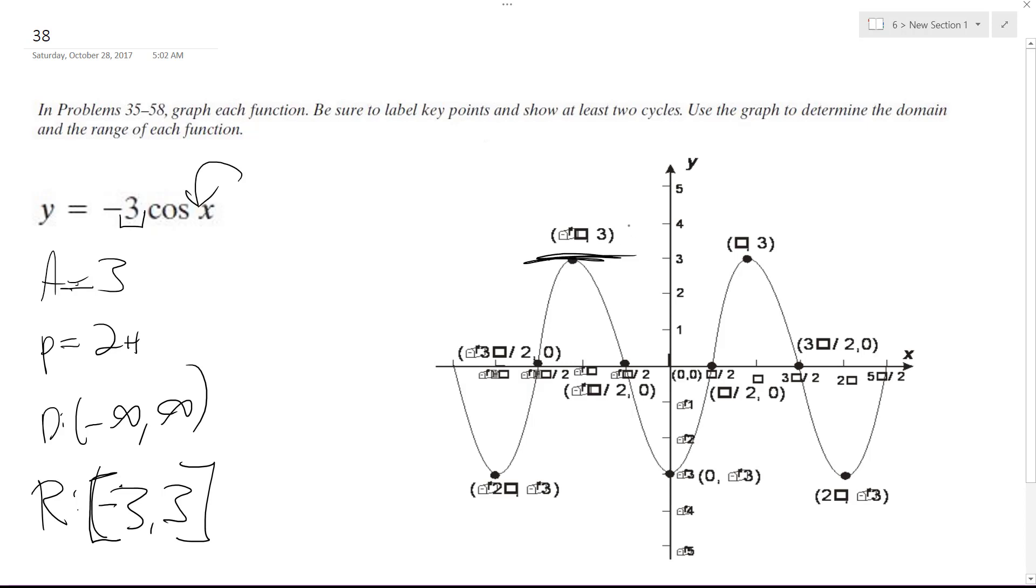So here's 3, here's 0, negative 3. Normally it would start up at 3, but because it's got a negative coefficient, it starts down here. Here's one cycle and then here's another cycle.